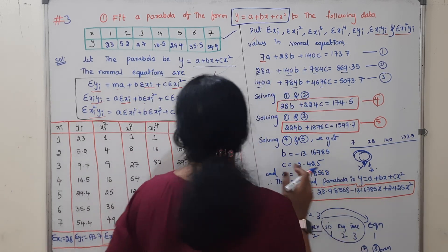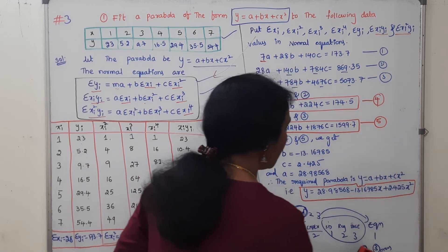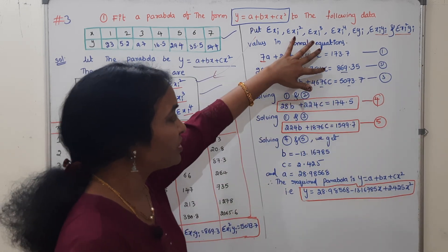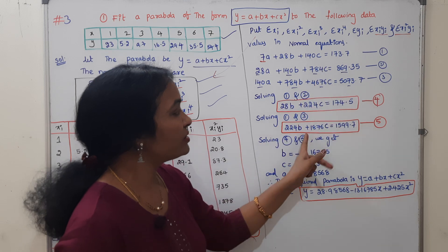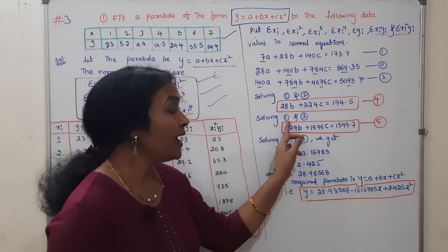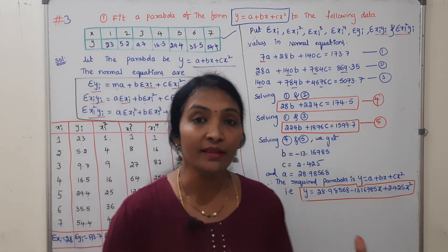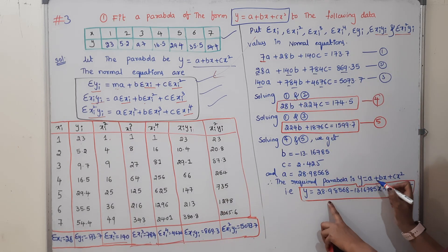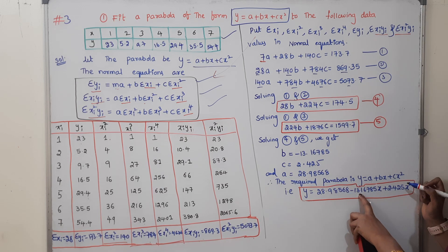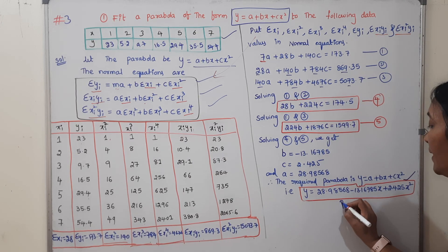I will get A, B, C values. This is the parabola equation: A + Bx + Cx². I will substitute A, B — meaning 13.16785 for the coefficient of x — and C for x². This is our required parabola.